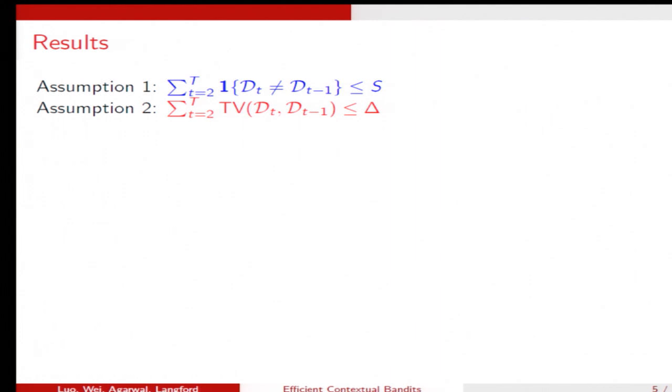And assumption two is even more reasonable. The distribution can change in every round, but the total variance sum up will not exceed delta. Because of the time, we will only present regret bounds under assumption 2.